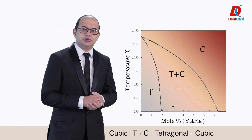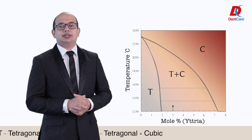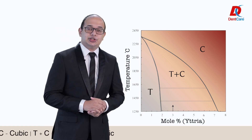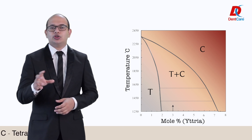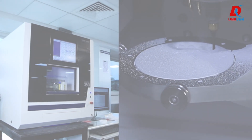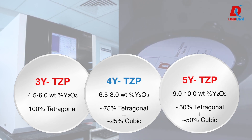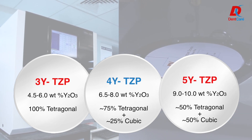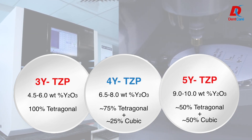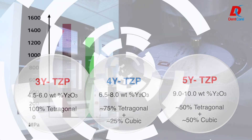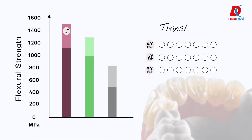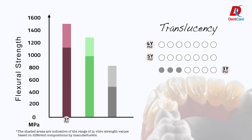To stabilize zirconia and maintain it in those phases at room temperature, stabilizers or dopants such as yttria are added in varying concentrations. This gives us 3Y, 4Y, or 5Y zirconia based on the amount of yttria added — where 3Y refers to 3 mole percent and so on. A 3Y zirconia has very high strength but is not very translucent.